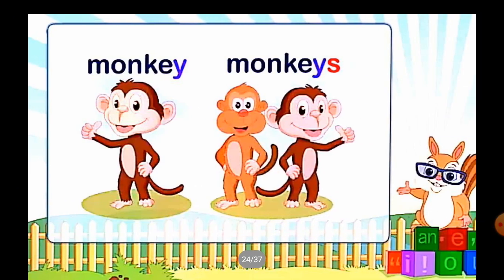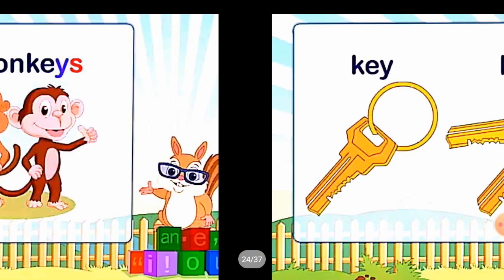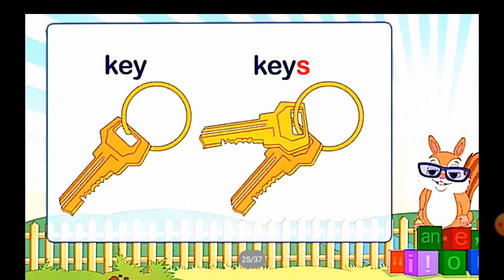Next: 'Monkey' — the letter before Y is E, which is a vowel, so instead of IES we just add S: 'monkeys'. 'Key' — again E is a vowel before Y, so the plural is simply 'keys'.